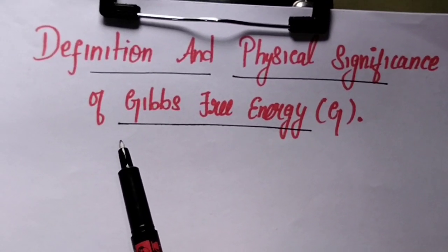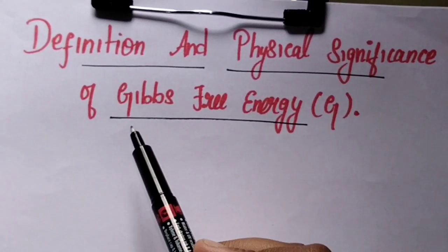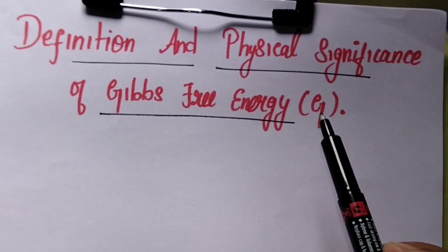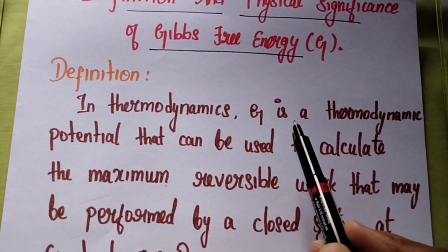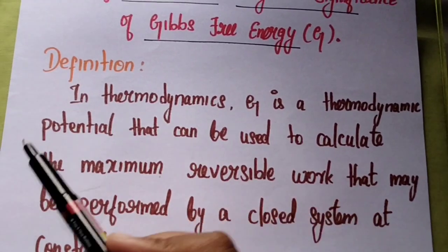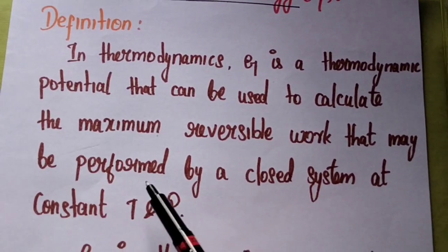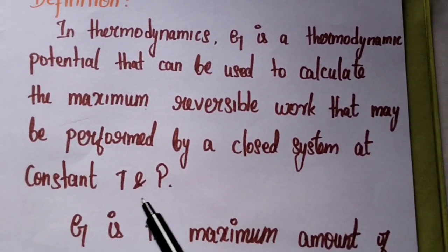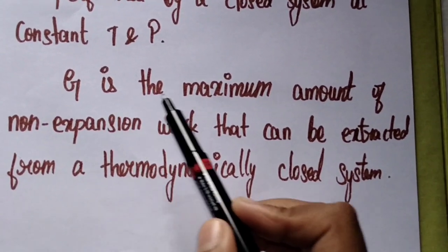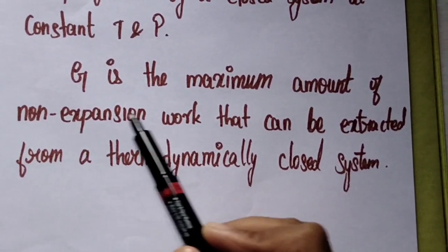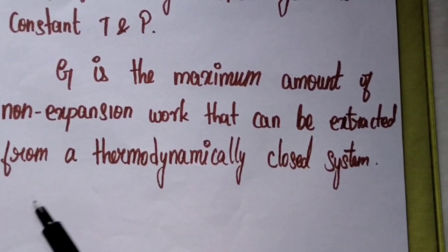Hello friends, welcome to our channel. Today in this video we are going to discuss the definition and physical significance of Gibbs free energy, given as G. In thermodynamics, Gibbs free energy G is a thermodynamic potential that can be used to calculate the maximum reversible work that may be performed by a closed system at constant temperature and pressure. In other words, G is the maximum amount of non-expansion work that can be extracted from a thermodynamically closed system at constant temperature and constant pressure.